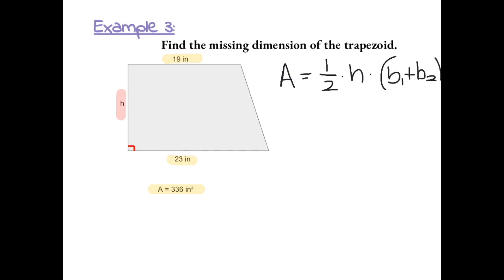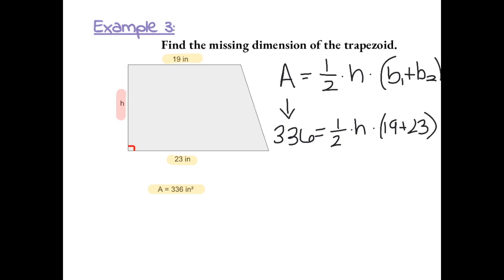Now let's fill in our given information. We know that the area is 336 inches squared, equals one-half times h — we don't know the height — times base 1 of 19 plus base 2 of 23. We can start by simplifying 19 plus 23, which gives us 42. Bringing everything else down: one-half times h times 42 equals 336.